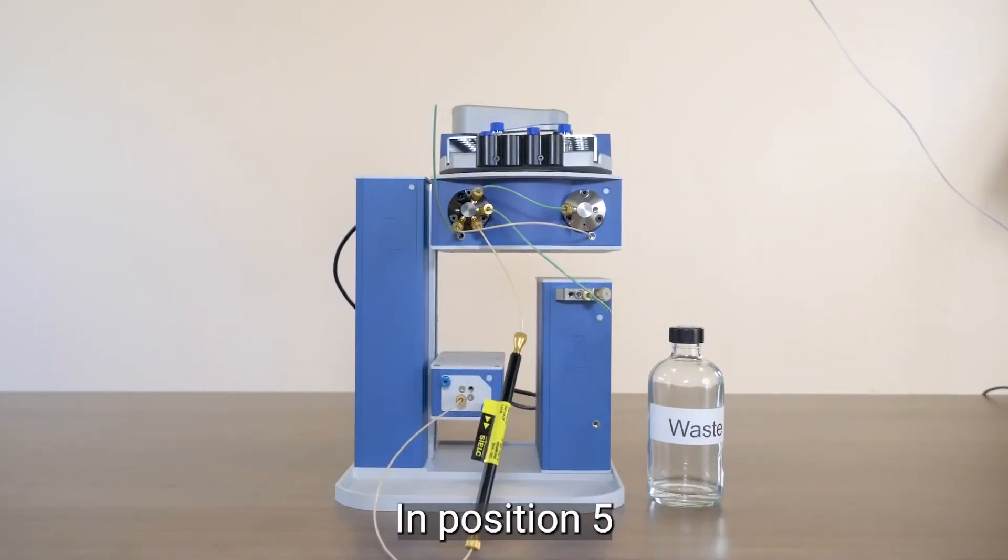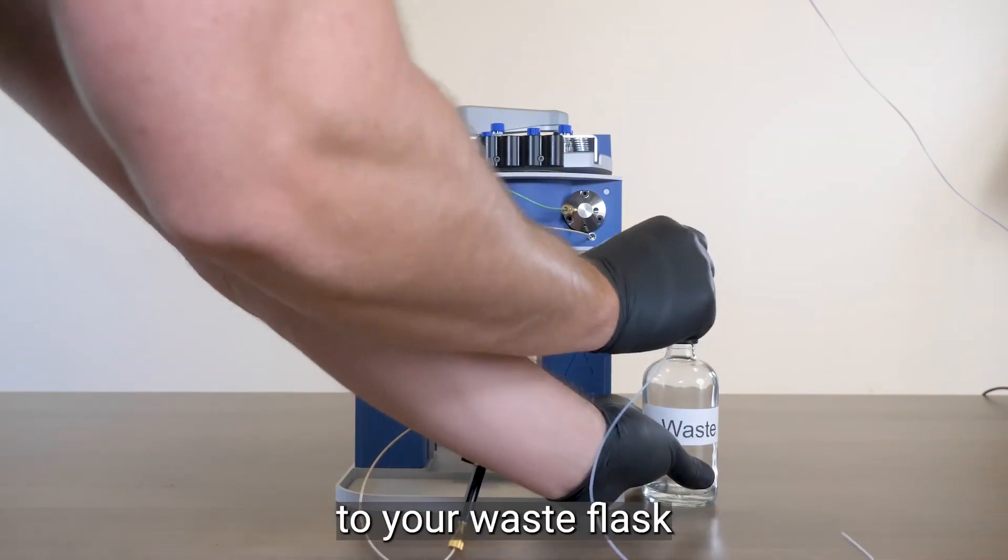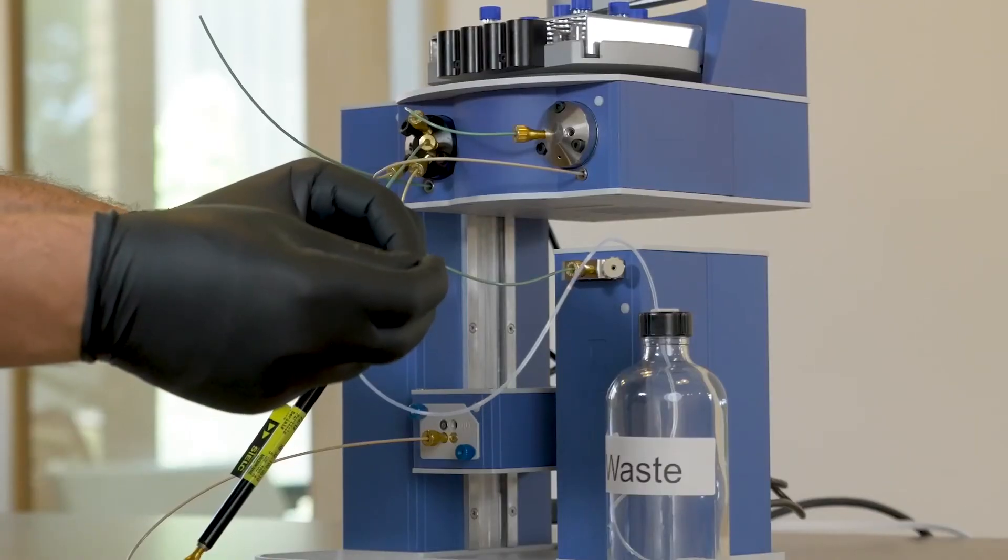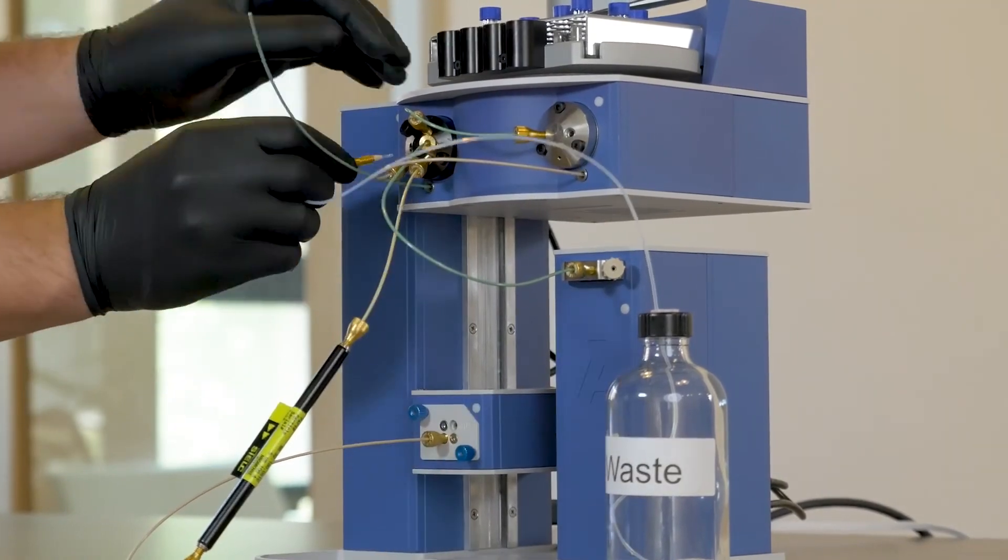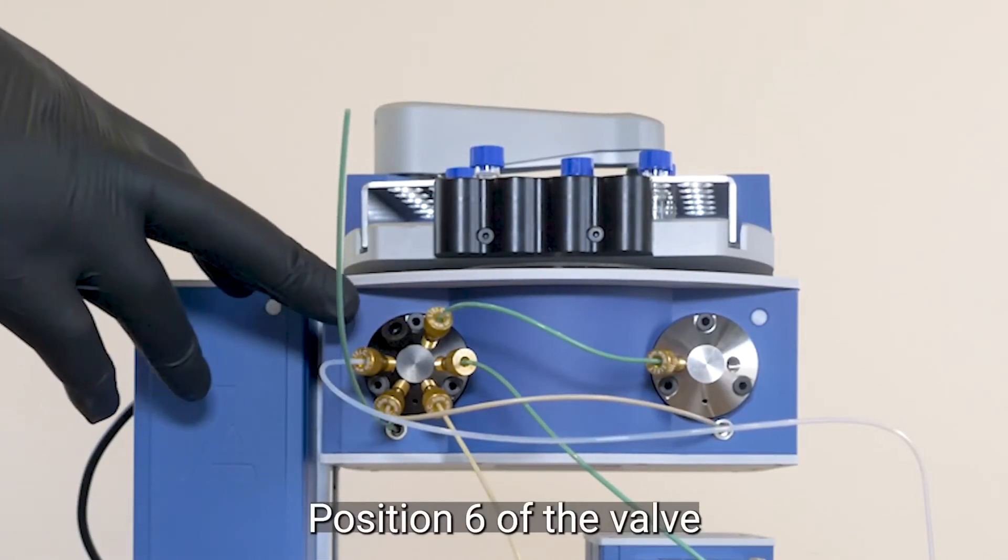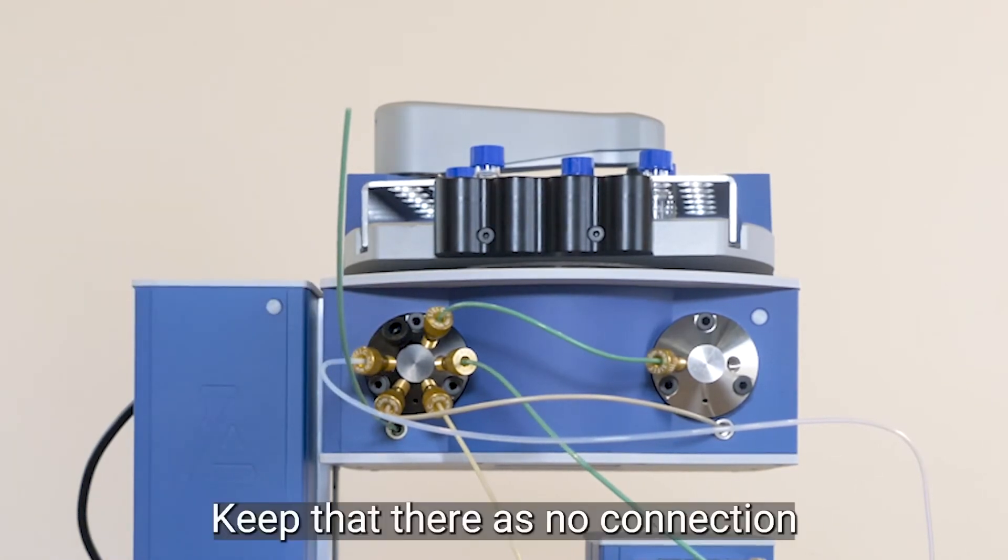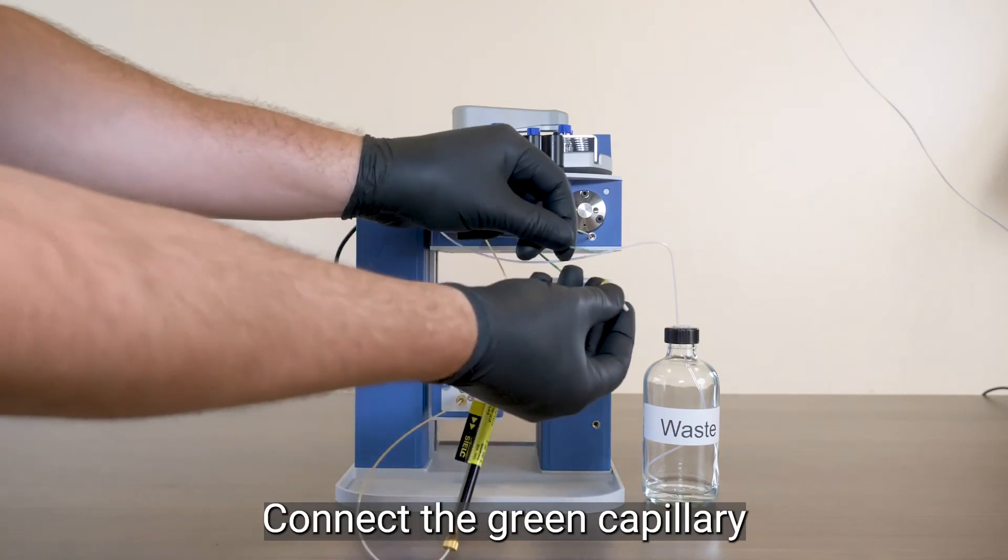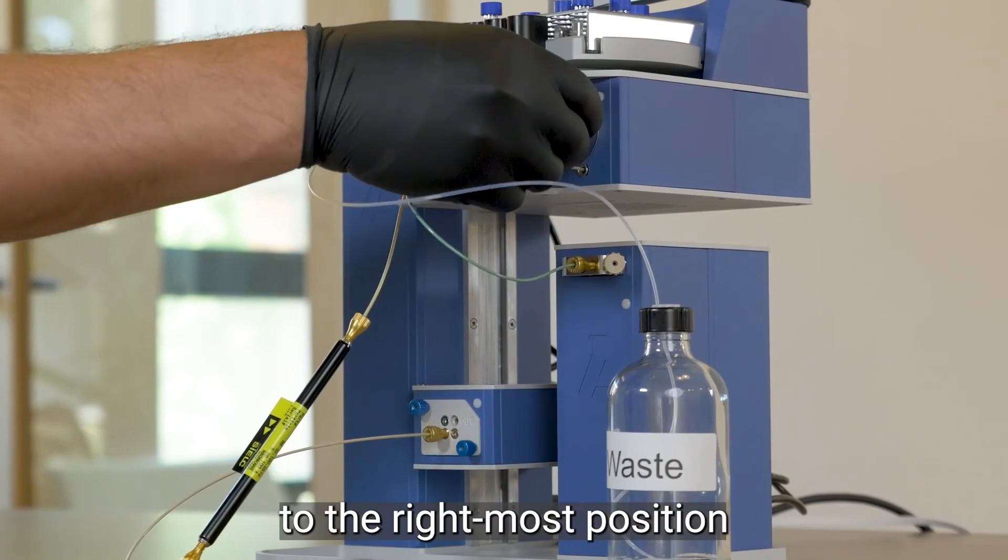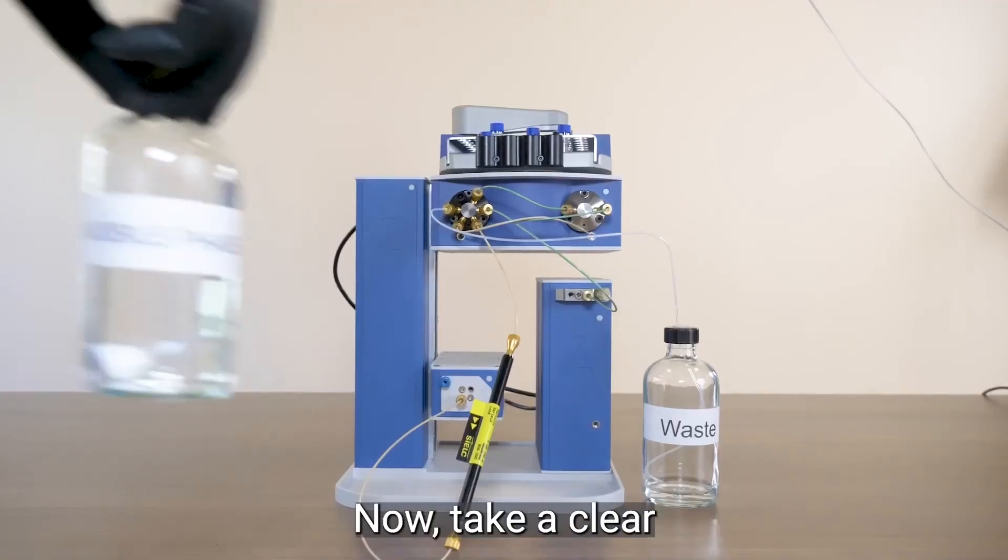In position five, connect a clear capillary to your waste flask. In position six of the valve should have a plug in it. Keep that there, as no connection is needed, and connect the green capillary that is extruding from the front left of the Auto Sampler to the right-most position of the Auto Sampler syringe.